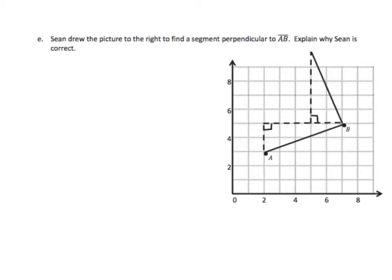It says Sean drew a picture to the right to find a segment perpendicular to AB. Explain why Sean is correct. Well, this is a little different than what we had done in the past, but it clearly is perpendicular. And how do we know? Remember, again, we have our right triangles.